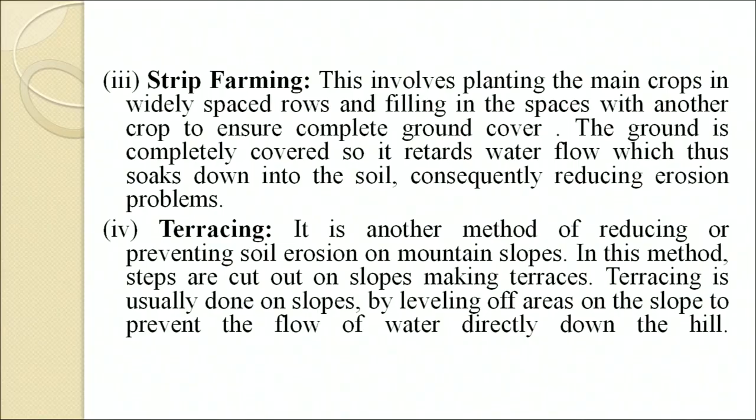Strip farming involves planting the main crops in widely spaced rows and filling the spaces with another crop to ensure complete ground cover. The ground is completely covered, which retards water flow and allows it to soak into the soil, consequently reducing erosion problems.